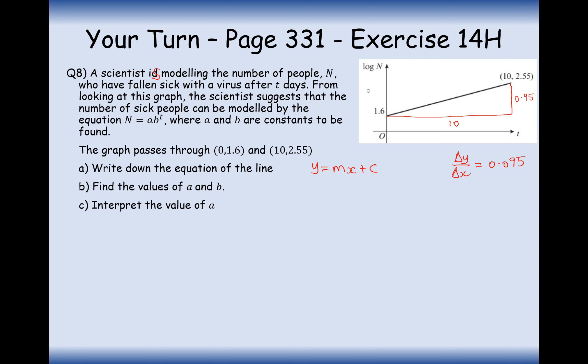So the equation is log n equals 0.095 times t plus 1.6, where 1.6 is the y-axis intersection. Moving to part b, finding the values of a and b: the y-axis intersection represents the value of log a, so log a equals 1.6. To work out a, we do 10 to the power of 1.6, which gives 39.8.